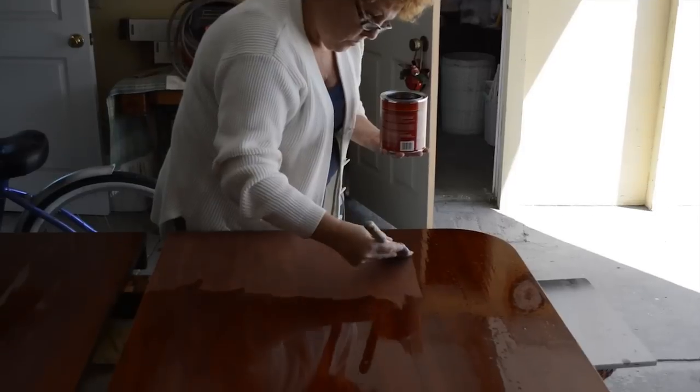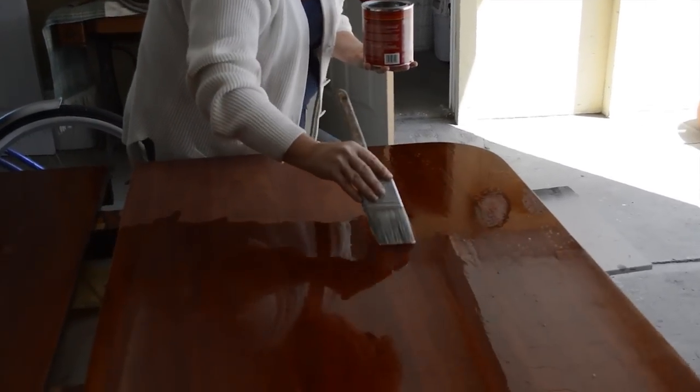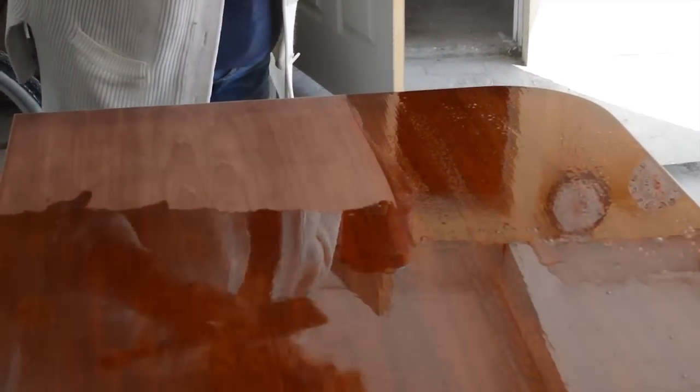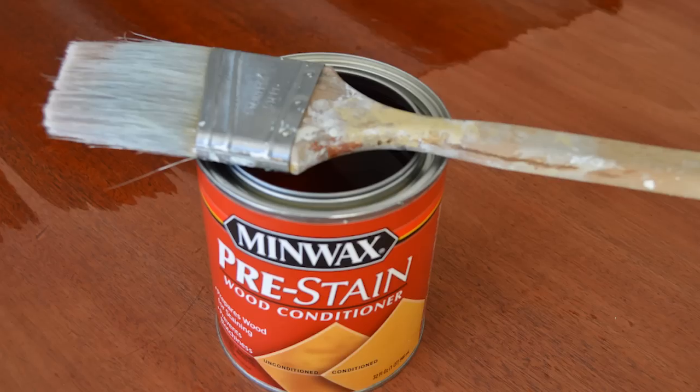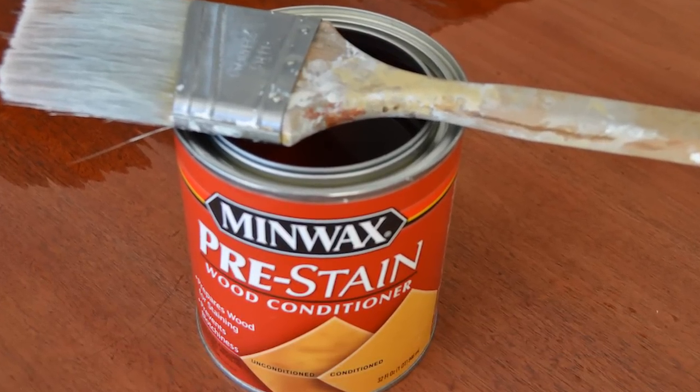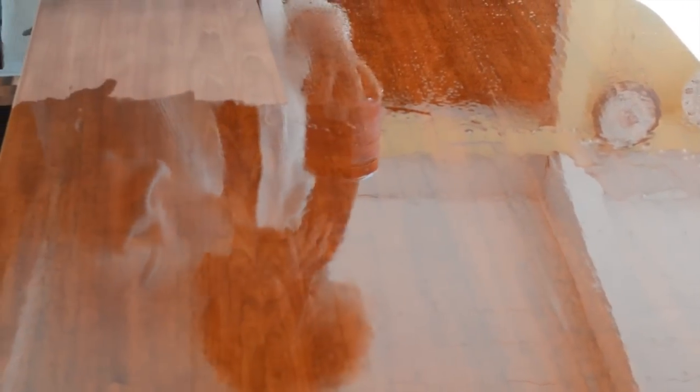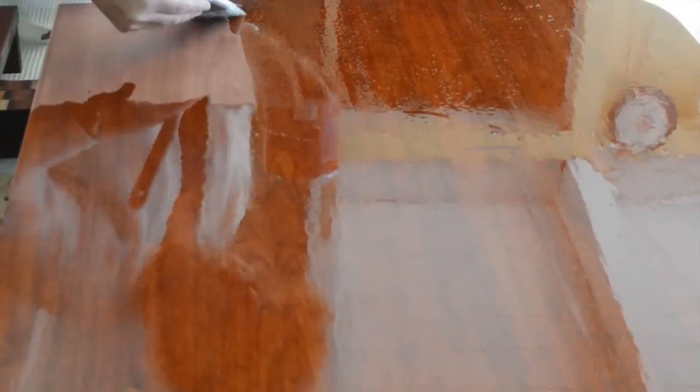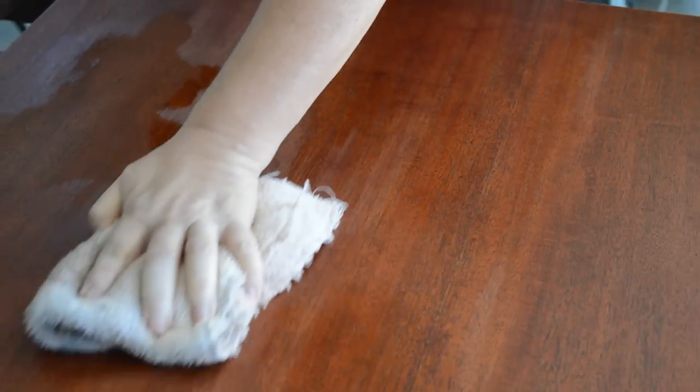In order to ensure a smooth, even finish, the wood should be conditioned before it is stained. I use Minwax Pre-Stain Wood Conditioner. It is applied using a brush. This product should be allowed to penetrate the wood for about 15 minutes. Next, remove any excess with a clean, dry cloth.